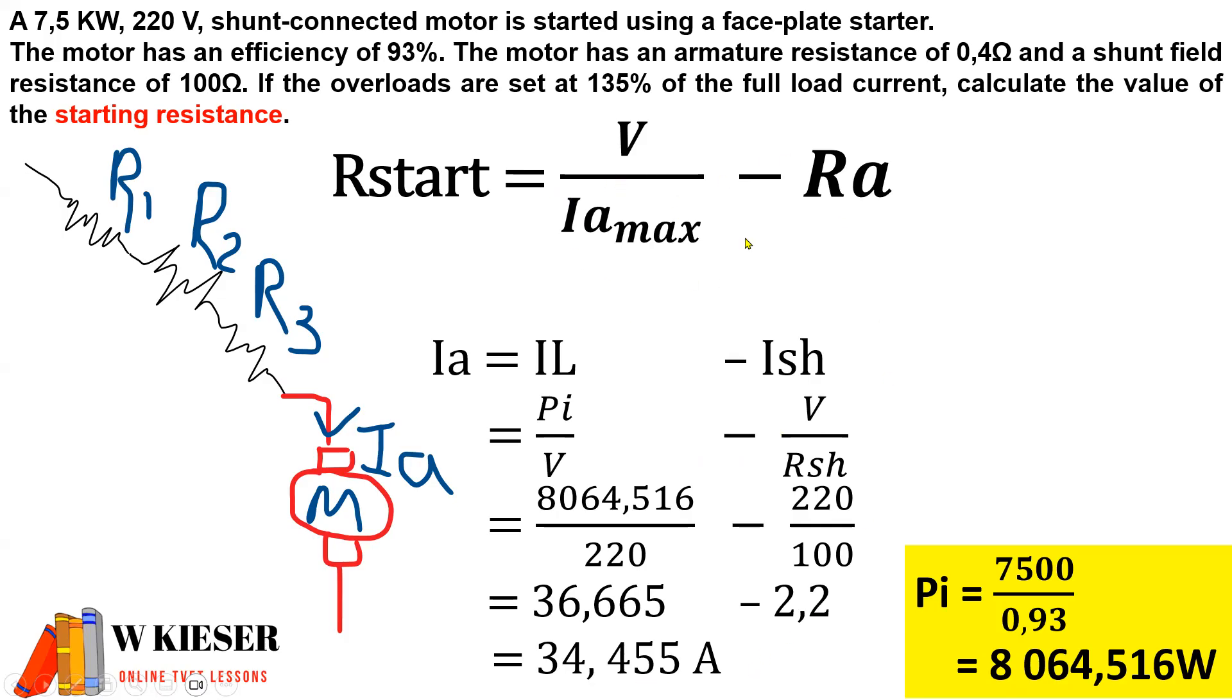But we need to substitute Ia max. What is the maximum amount of current that will pass through this armature assembly? To determine that we take our overload setting of 135% divided by 100 times the normal armature current under normal operating conditions, and therefore Ia max would be 46.514 amps.